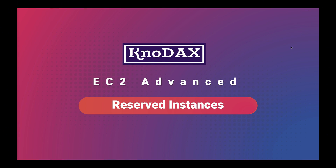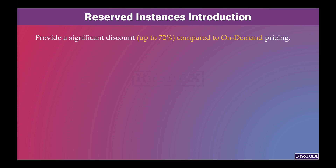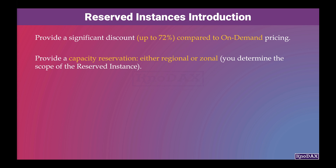Welcome back. This video is about reserved instances, which is another option to purchase EC2 instances. Amazon EC2 reserved instances provide a significant discount, up to 72%, compared to on-demand pricing, and provide a capacity reservation scoped in either an AWS region, also called Regional, or in an Availability Zone, also called Zonal. You determine the scope of the reserved instance — whether you want regional scope or zonal scope.